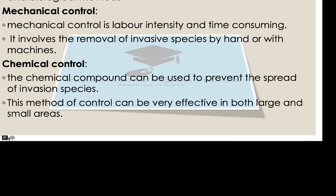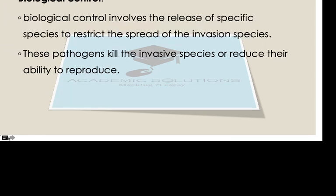There is also a chemical way of trying to control alien plants, where chemical compounds are used in order to prevent invasion of the species. It is very effective and can kill a lot of them. It requires less time and less energy compared to the mechanical method.